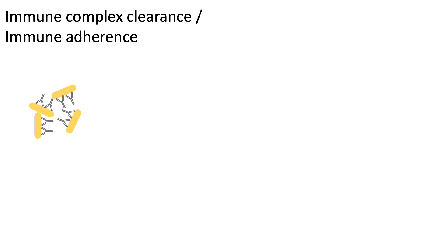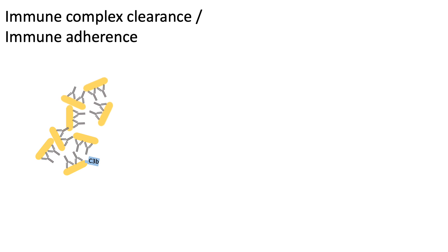Immune complex clearance is also termed immune adherence. Immune complexes are normally kept small and soluble by the classical complement pathway. When there is persistence of the unwanted antigen, larger insoluble immune complexes form. The alternate pathway plays an important role here: C3b produced by the alternate pathway binds to different epitopes of the antigen and disrupts large immune complexes into small soluble complexes.